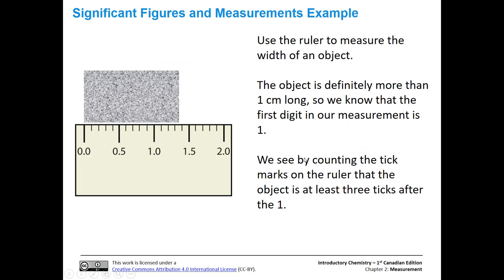The first thing has to do with significant figures and measurements. We have an object and a ruler, and we're going to measure it. We can see one centimeter, 0.1, 0.2, 0.3 — three tick marks, but we didn't make it to the 0.4. So that means we know we have at least 1.3 centimeters. Those are known digits — we have tick marks to tell us we definitely have that quantity. Significant figures are the known digits plus the first estimated digit.